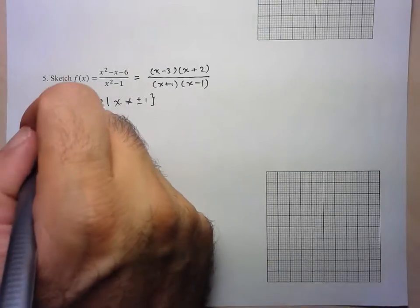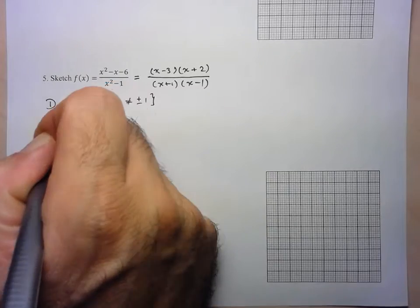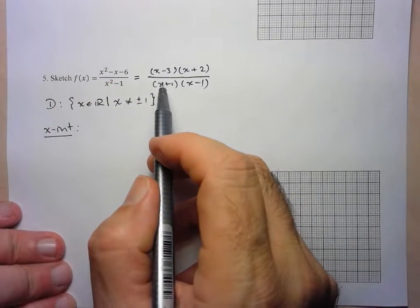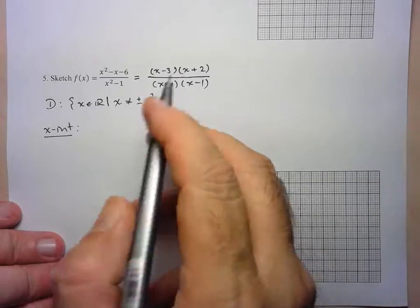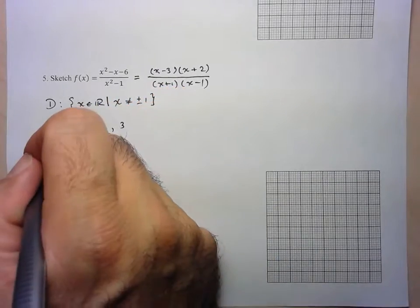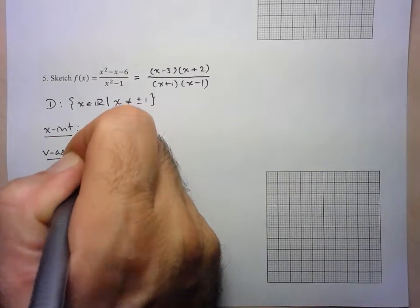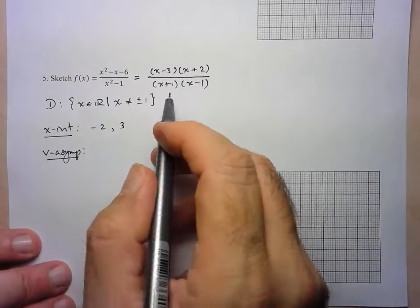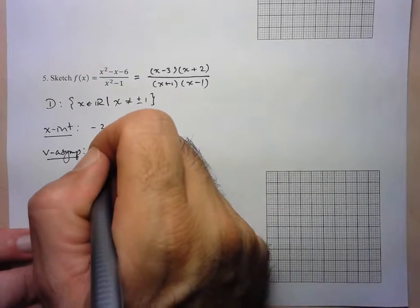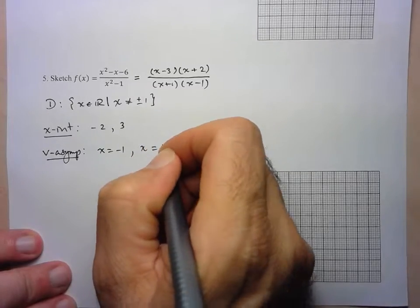Next, the x-intercepts: we look at where the numerator equals zero, which is at x = 3 and x = -2. Then the vertical asymptotes, where the denominator equals zero: we have x = -1 and x = 1.